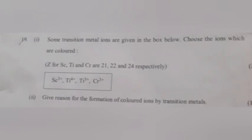Question 19, Part 1: Some transition metal ions are given; choose the ions which are colored. Answer: Di³⁺ (Ti³⁺). Part 2: Give reason for the formation of colored ions by transition metals. Answer: d-d transition.